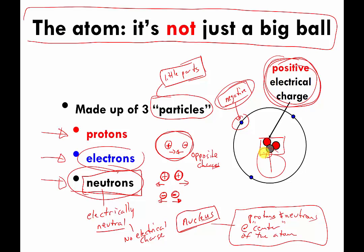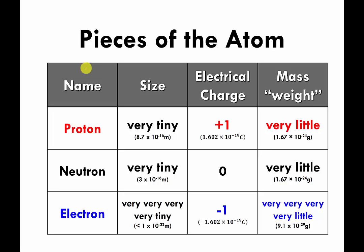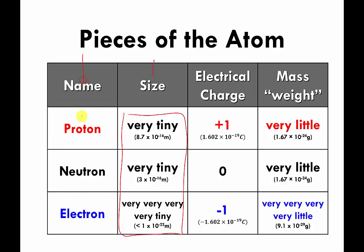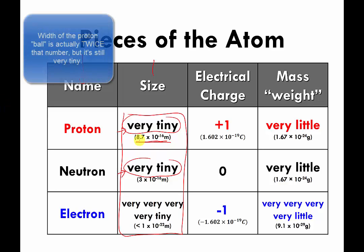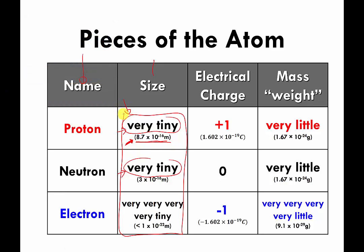Here is a table summarizing what I showed you. In one column there's the name of the particle, in another column there's the size. The proton is very tiny and the neutron is also very tiny — I'm saying this to tell you they are roughly the same size. The width of the proton is about 8.7 times 10 to the negative 16 meters, which is pretty small. You don't need to know that number — all I want you to know is that the proton is very tiny and the neutron is roughly the same size. The electron is even tinier, less than 1 times 10 to the negative 22 meters wide, but you should just realize it's much smaller than protons and neutrons.